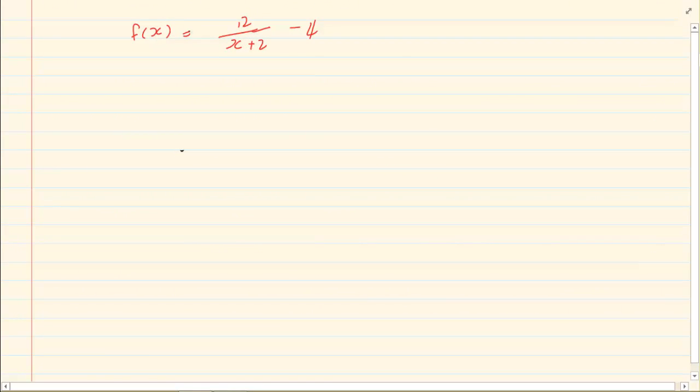We have F of X is equal to 12 over X plus 2 minus 4. Our asymptote is X is equal to minus 2. Remember we are changing the sign there. And Y is equal to minus 4.